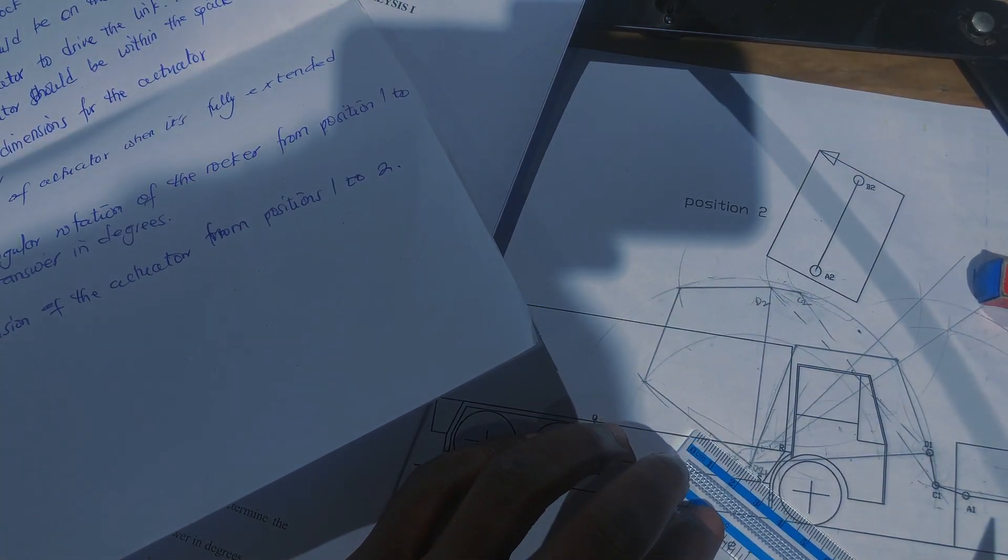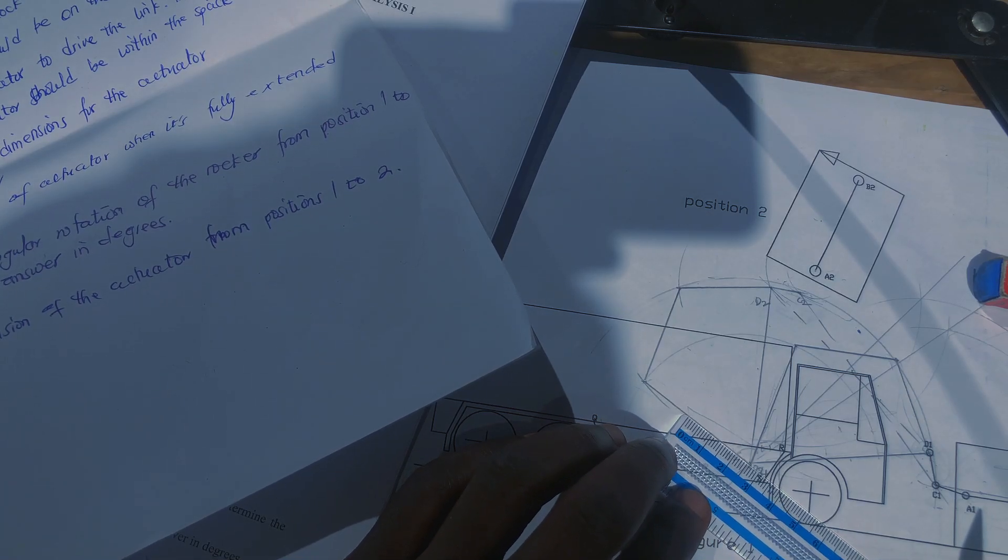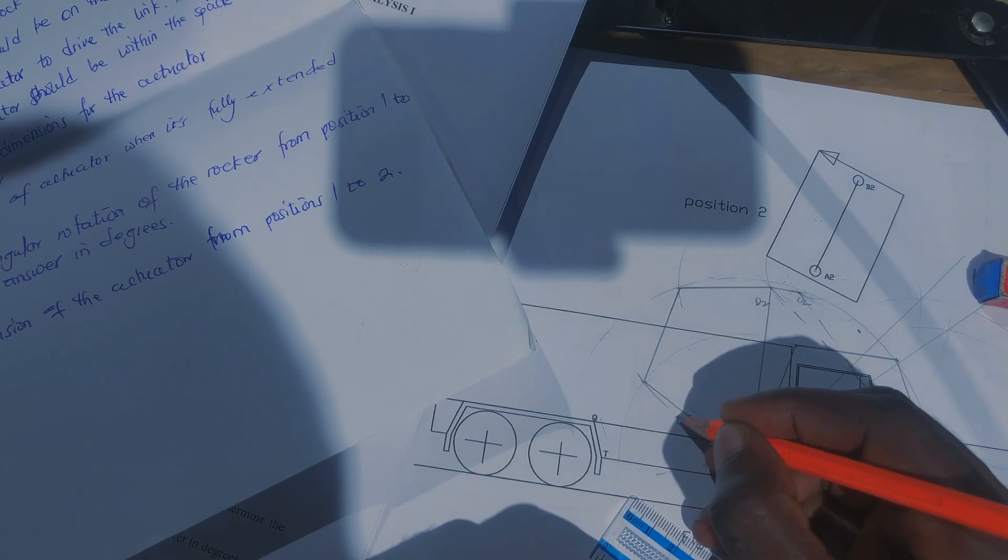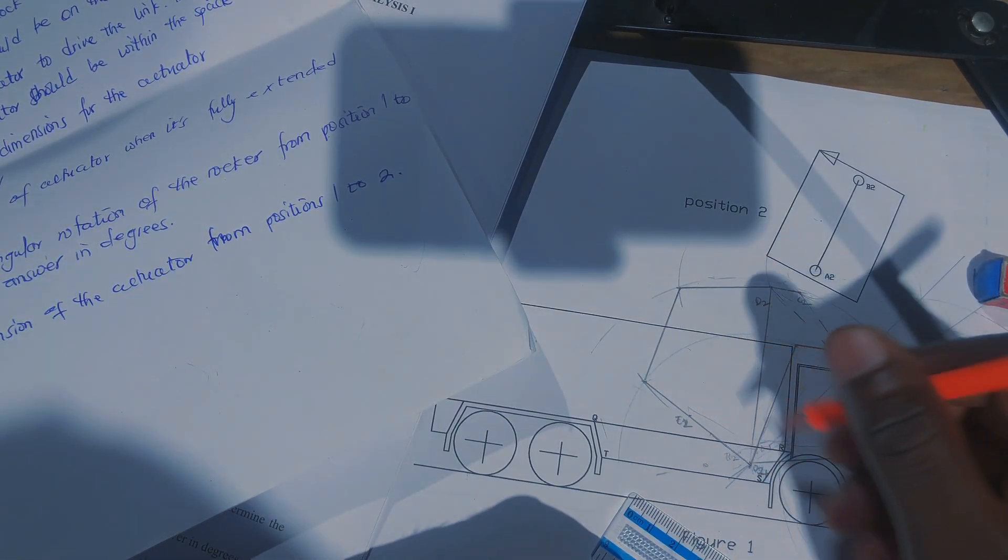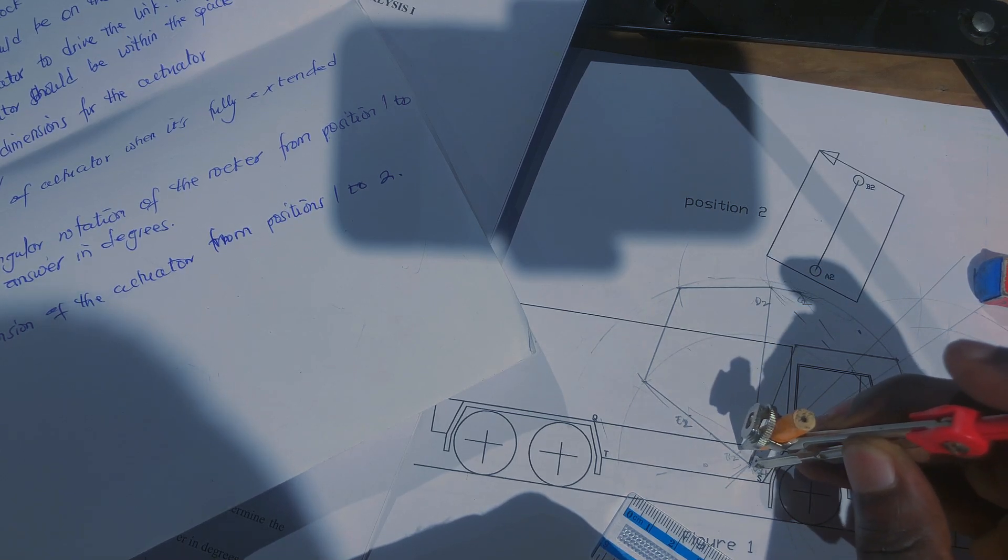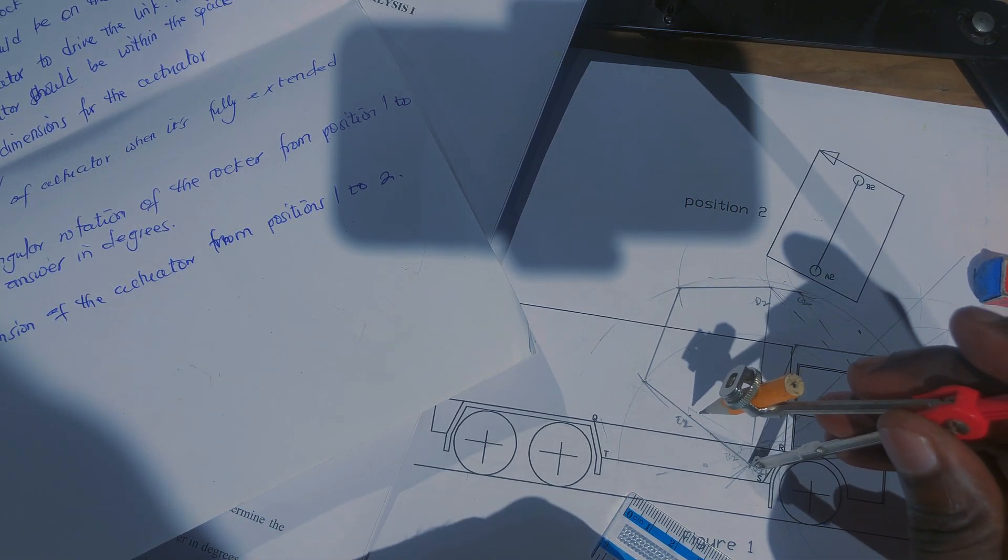So 2.6 is here. This point E will be E1, E2 is on position two. So use your compass to locate position one. If you're done with position one, you look at position two.